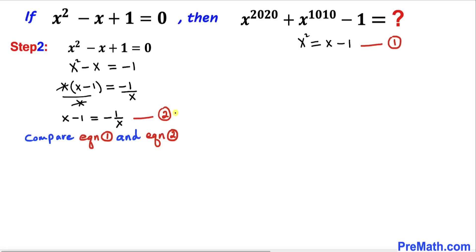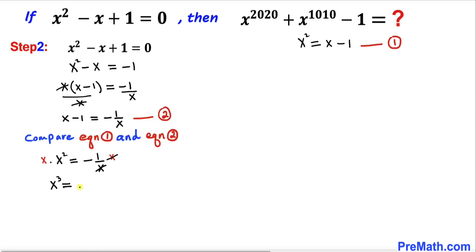Comparing equations 1 and 2, we can write x squared equal to negative 1 divided by x. Multiplying both sides by x, on the left hand side x times x squared gives us x to the power 3, and on the right side the x cancels, leaving negative 1. So x cubed equals negative 1.